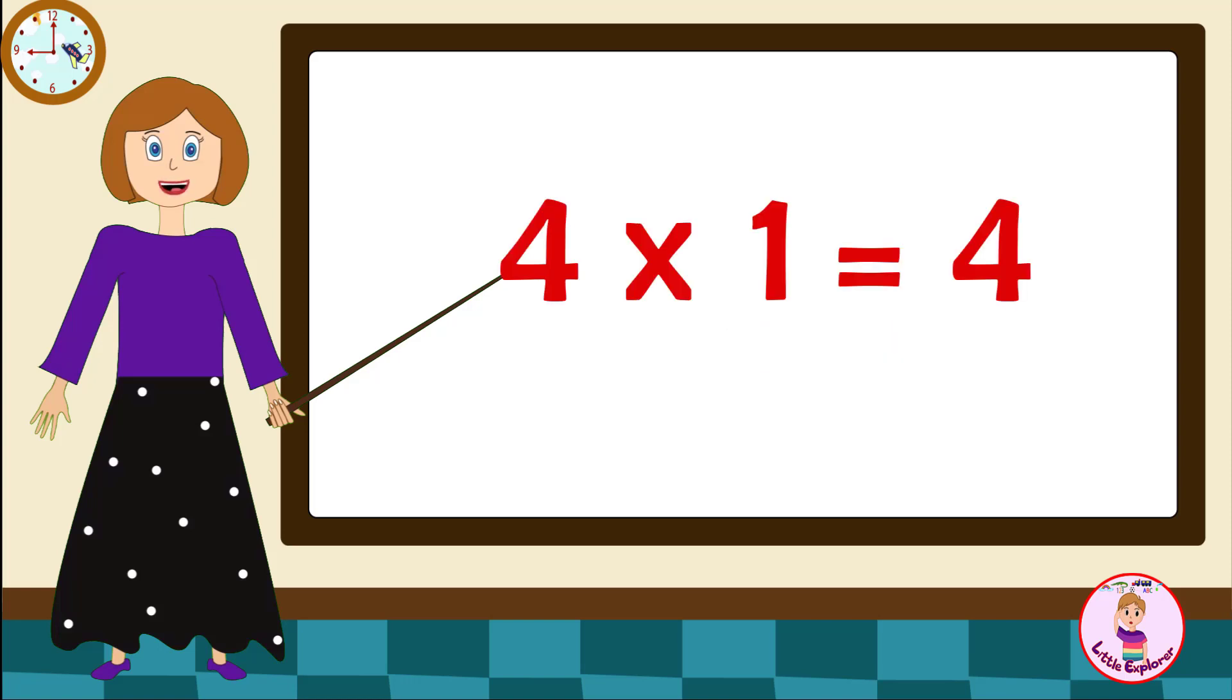Four ones are four. Four twos are eight. Four threes are twelve. Four fours are sixteen. Four fives are twenty.